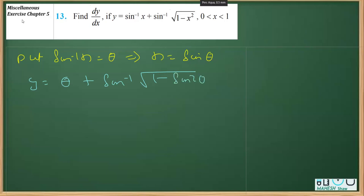So this is y equals theta plus sin inverse, this is square root 1 minus sin squared theta, so that will be square root 1 minus sin squared theta is cos squared theta.